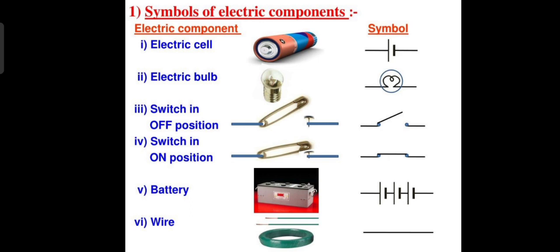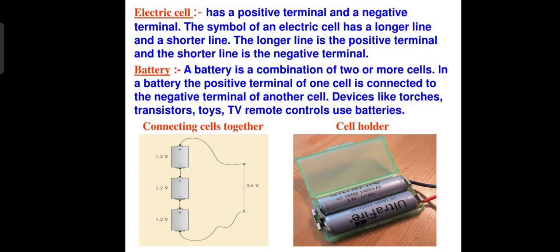The wire is a simple straight line, we just represent it by a straight line. Now what is the electric cell? An electric cell has two terminals - one is the positive terminal, second is the negative terminal. When we connect those two terminals with a wire, we can use the battery.